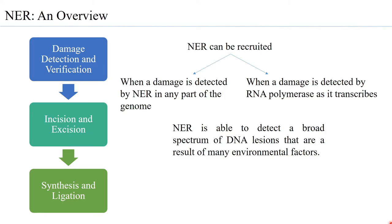NER is able to detect a very broad spectrum of DNA lesions which occur due to several different environmental factors, including damage caused by UV radiation. In many bacteria, apart from photoreactivation through which thymine dimers or pyrimidine dimers are removed, NER is also responsible for addressing cyclobutane pyrimidine rings and 4-6 adducts formed due to UV radiation, as well as lesions caused by oxidation or incorporation of a base analog. There are a myriad number of lesions that can be detected by the NER.